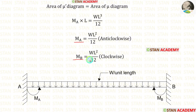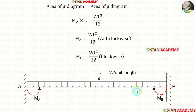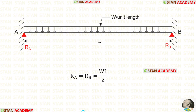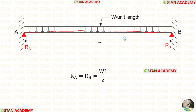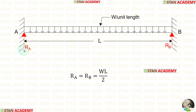Ma and Mb will have the same values but they will be in opposite directions. Ma will be acting in the anticlockwise direction and Mb will be acting in the clockwise direction. Now let us find the vertical reactions. Here we have symmetrical loading, so the vertical reactions will be equal to the total load divided by 2. For the UDL, to find out the total load we multiply the load with the distance, so we get the total load WL. The reactions Ra and Rb will be equal to WL divided by 2.